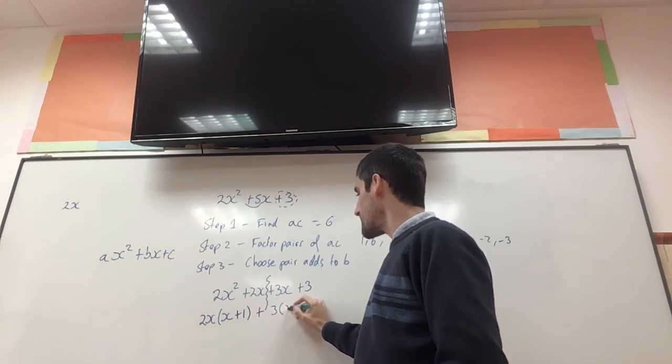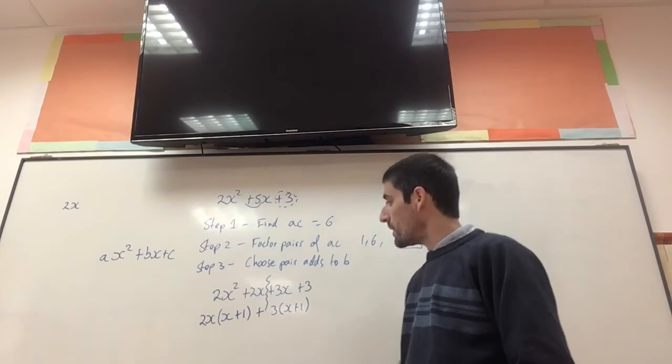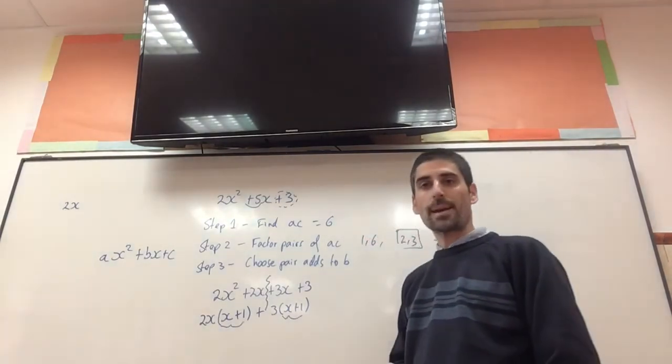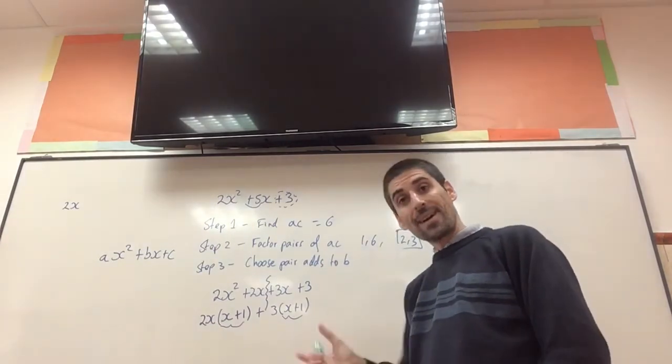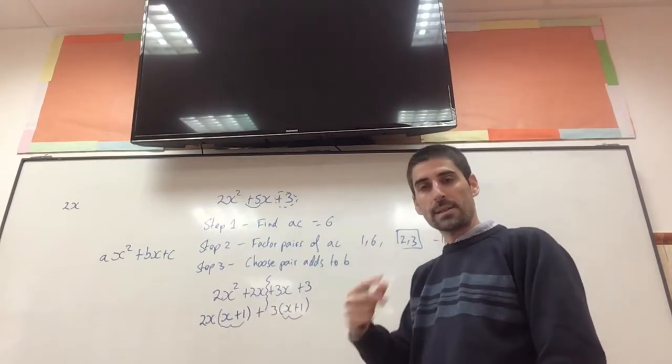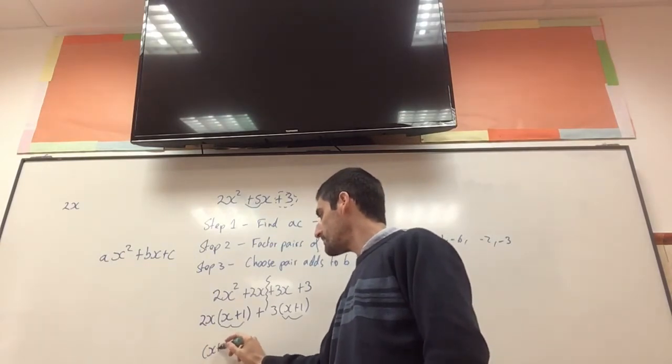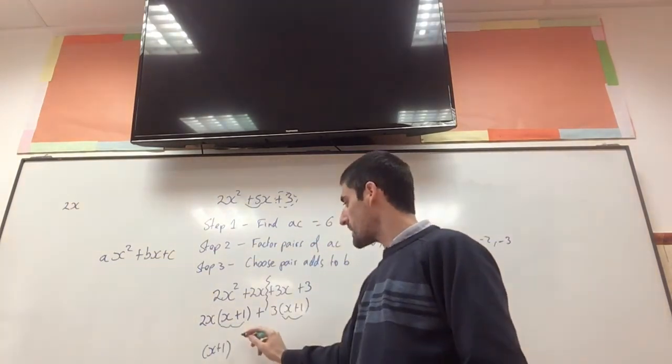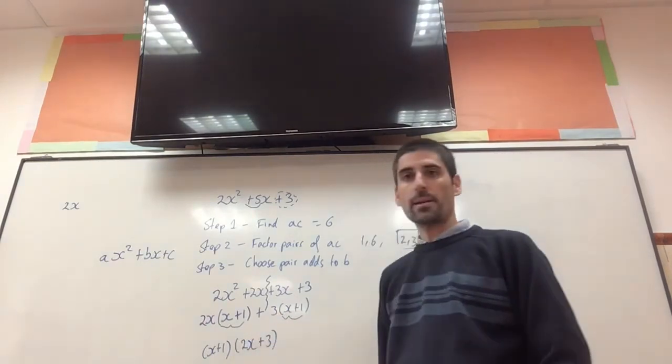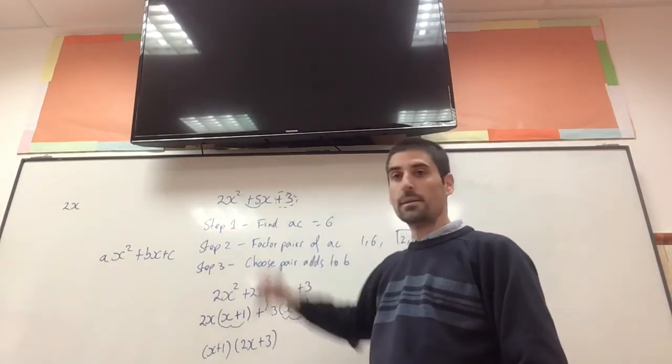So this is 3 brackets x plus 1. And if you think correctly, what you'll notice is that you get the same bracket on either side. So you can factorise, you can treat the bracket, think about the bracket as being a or y. It's just one thing. So it's x plus 1, which is multiplying 2x and 3. And that's how we factorise a quadratic expression where the coefficient of x squared is bigger than 1.